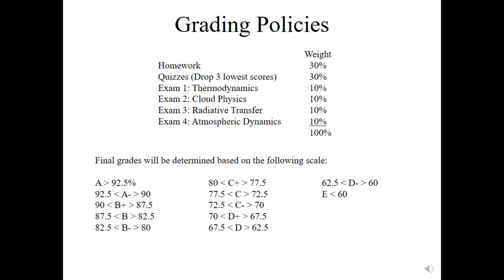Your grade will be determined through homework, quizzes, and the exams. Homework makes up 30%, quizzes make up 30%, and each exam makes up 10%. I will drop the three lowest quiz scores, and the final grade uses the 90-80-70-60 scale. If you want to get an A, you need 92.5% or better; A- is between 90 and 92.5, and so on.